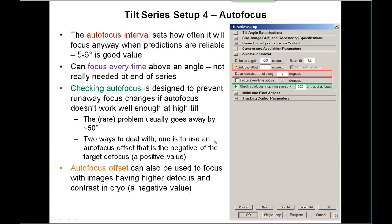There are two ways to deal with runaway focus. One is to use an autofocus offset that is the negative of the target B focus. The autofocus offset is an amount that the focus gets changed before taking the focus pictures, and then changed back after. You can also use this to take focus pictures at a higher defocus and higher contrast, which is useful for cryo — in that case you would put in a negative defocus value.